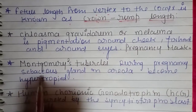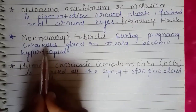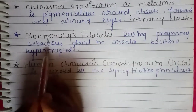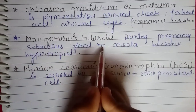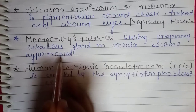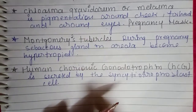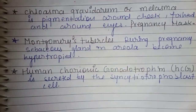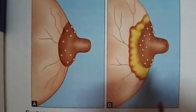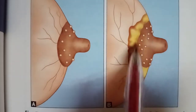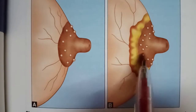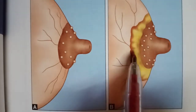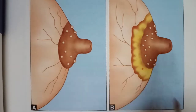Next is Montgomery's tubercles. During pregnancy, the sebaceous glands in the areola become hypertrophied. That means the areola of the breast develops these raised structures during pregnancy, and those are called Montgomery's tubercles.